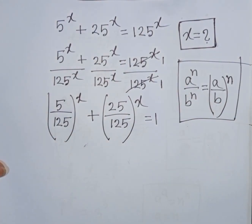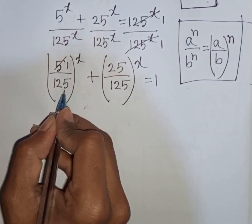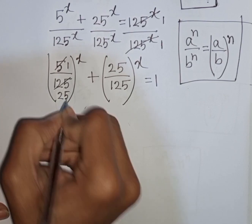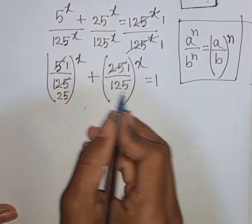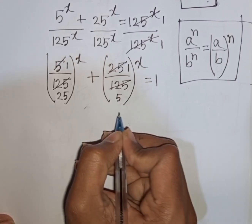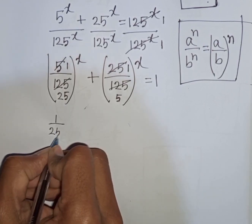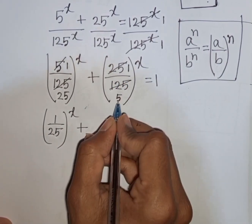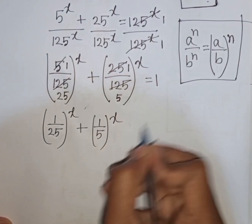That means it will be 1. Now 5 divided by 5 means 1, and 125 divided by 5 means 25. Then 25 divided by 25 means 1, and 125 divided by 25 means 5. So we have (1 over 25) bracket power x plus (1 over 5) bracket power x is equal to 1.